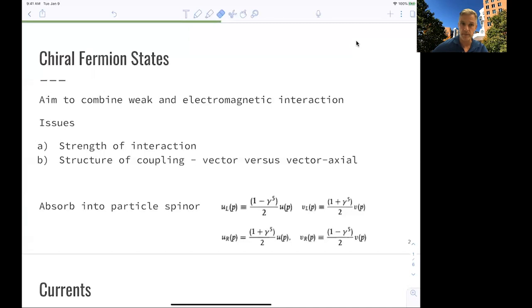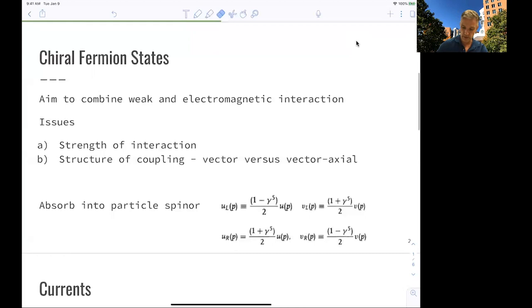So one way to mitigate this problem is to simply absorb this 1 minus gamma 5 term in the definition of the particle spinors. I have to warn you, this is a little misleading and led to some confusion in the class before. What we're doing is we take our spinor and project out with the 1 minus gamma 5 term what the left-handed component of this spinor is. This is just a projection and definition, and we can do this for antiparticles as well as for the right-handed components.